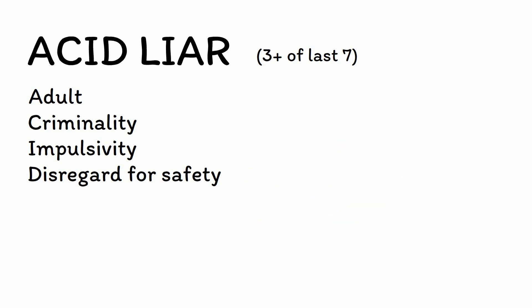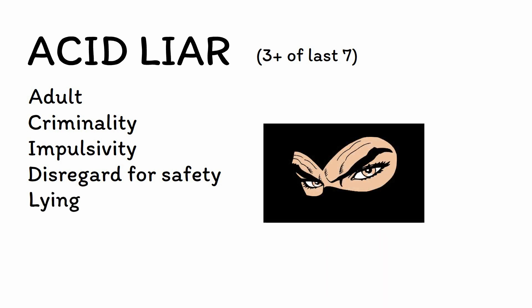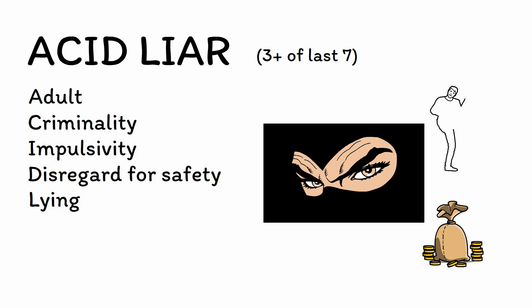L is for lying. People with ASPD frequently lie, cheat, and deceive others. This is often done for some kind of secondary gain, such as stealing someone's credit card information, although some people with ASPD will mislead others simply for the thrill of it.